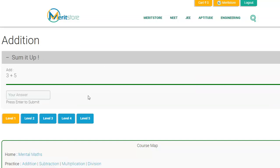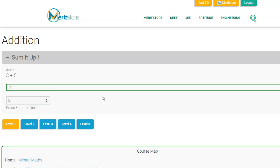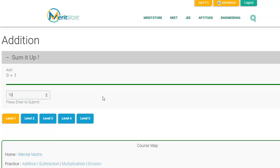Next, you need to be good with basic mathematical operations like addition, multiplication, subtraction, and division. So on MeritStore, we have this great platform where you can practice calculations. This is a very basic version of it. You can choose different levels. Let's go to level 3.